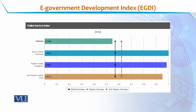If we talk about a sub-category of the EGDI index called the Online Service Index, the world leader is again Denmark and its score is an absolute 1. The regional leader in this regard is Singapore, with a score of 0.9861, almost near to 1. The sub-regional leader is India with a score of 0.95. Pakistan's score in the Online Service Index is 0.586, which is almost half of the world leader's or sub-regional leader's score.